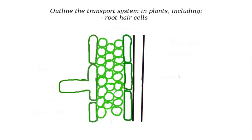In this presentation we're going to look at the transport system in plants. Specifically we're going to look at a number of the structures and how they're able to move water and minerals into the plant and move products of photosynthesis around the plant.